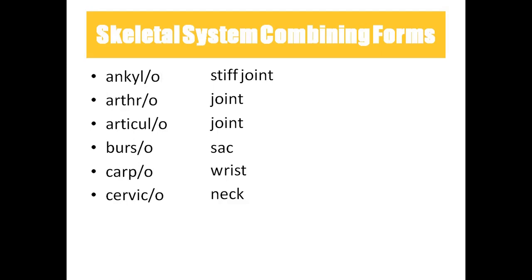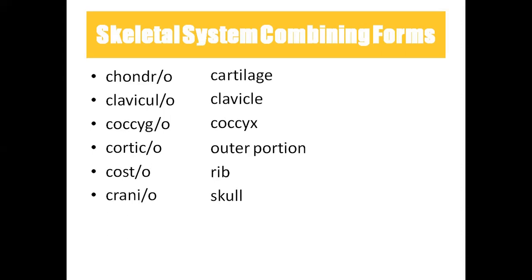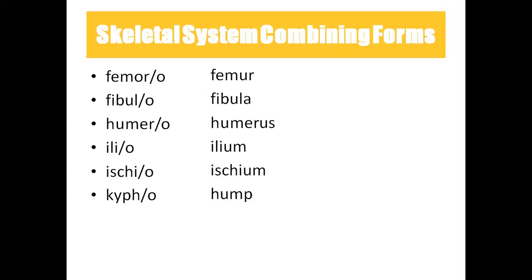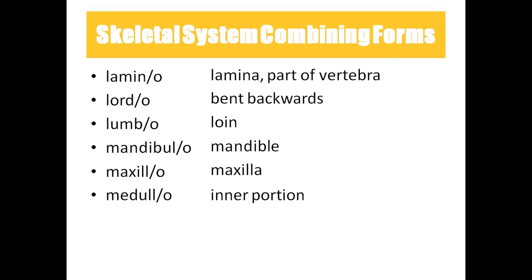'Burso' means sac, so the membranous sac is called bursa. 'Carpo' means wrist, 'cervico' is neck, 'chondro' is cartilage, 'claviculo' is clavicle — also called the collarbone. 'Coccygio' means coccyx or tailbone, 'cortico' means outer portion, 'costo' means ribs, 'cranio' is skull, 'femoro' means femur, 'fibulo' means fibula, 'humoro' means humerus. 'Ileo' means ilium, 'ischio' is ischium, 'kypho' means hump, and 'lamino' is a part of the vertebra — laminectomy is performed to relieve pressure on the spinal cord by removing the lamina.